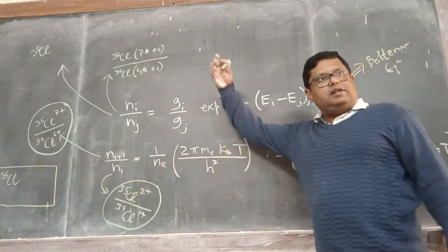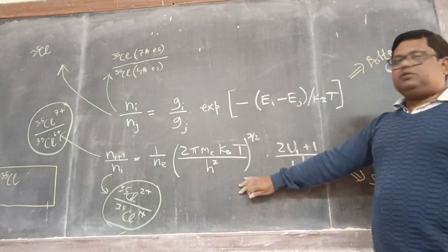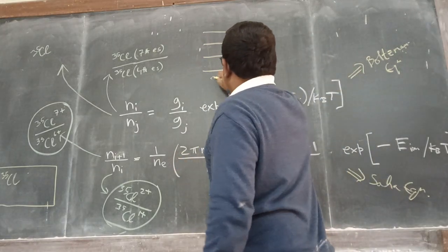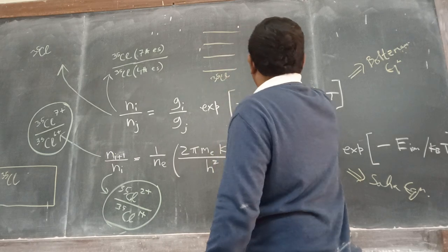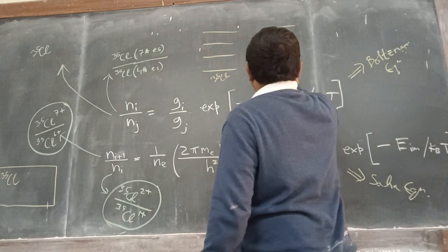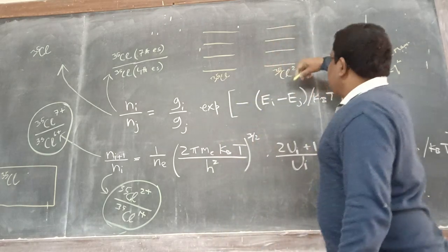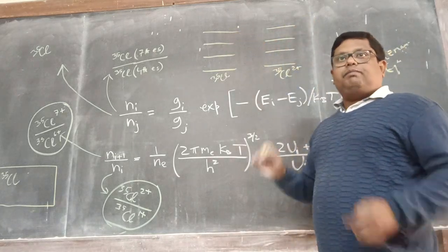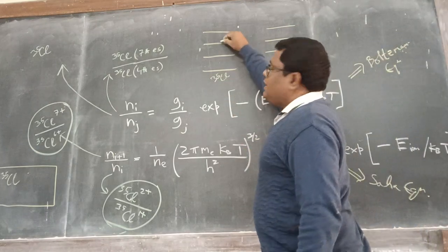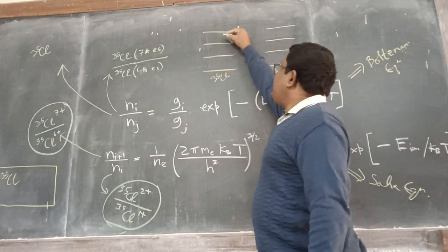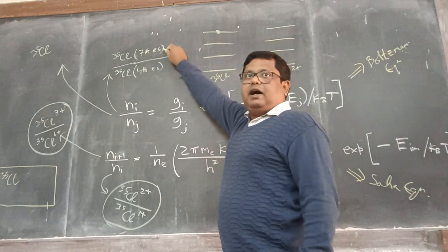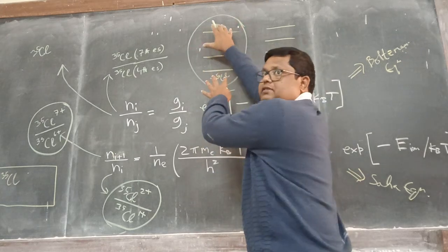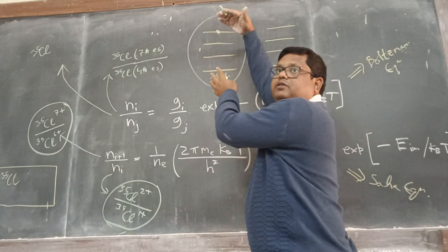Now what about the Boltzmann equation? You probably studied this previously. Consider chlorine-35 as a neutral atom, and similarly chlorine-35 2+ as an ion — each with their own level scheme. The Boltzmann equation can tell you how many chlorine-35 atoms in, say, the 7th excited state are there compared to the 4th excited state. So it can tell you only about a single species — comparing populations at different energy levels.